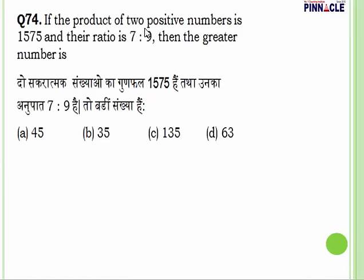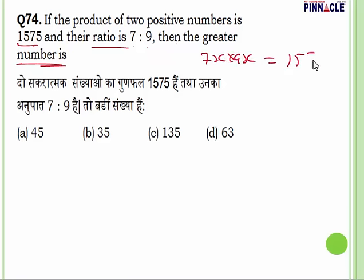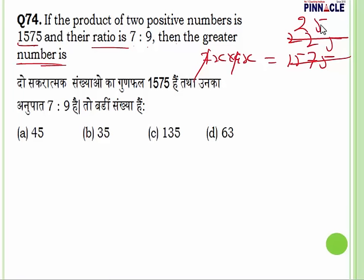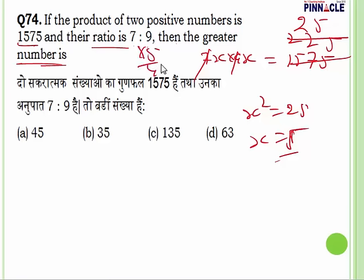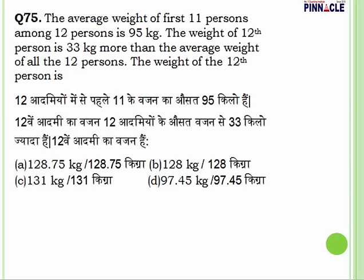Question number 74: the product of two positive numbers is 1575 and their ratio is 7:9. Let the numbers be 7x and 9x. Then 7x into 9x equals 63x squared equals 1575, so x squared equals 25, x equals 5. The greater number is 9 into 5 equals 45. Answer is 45.